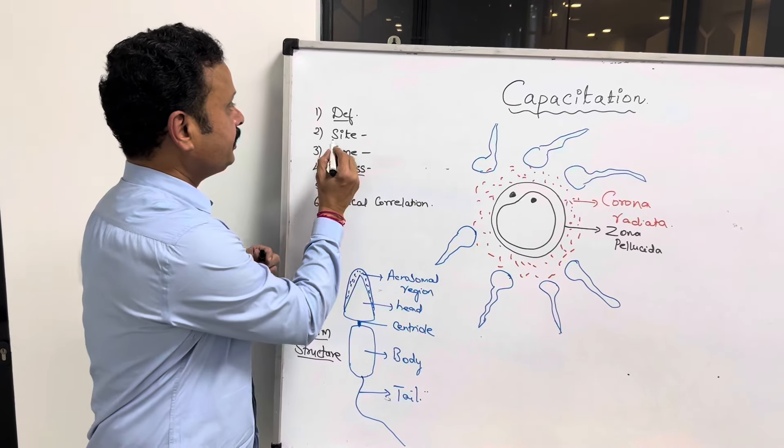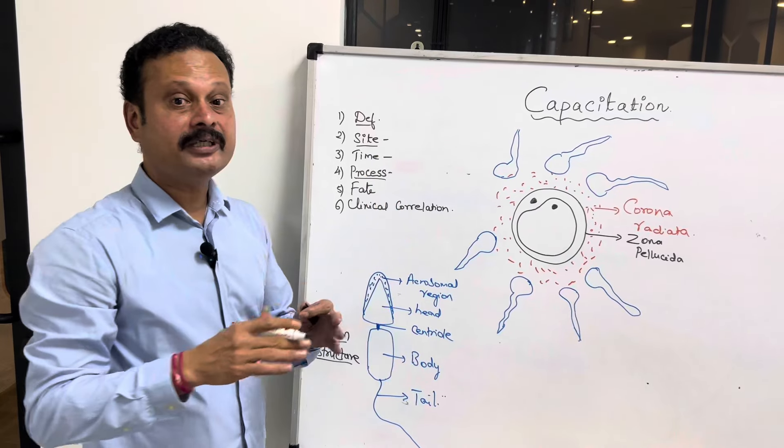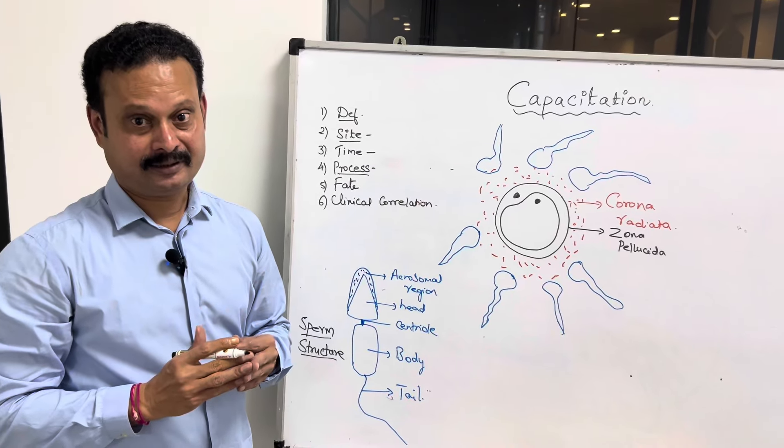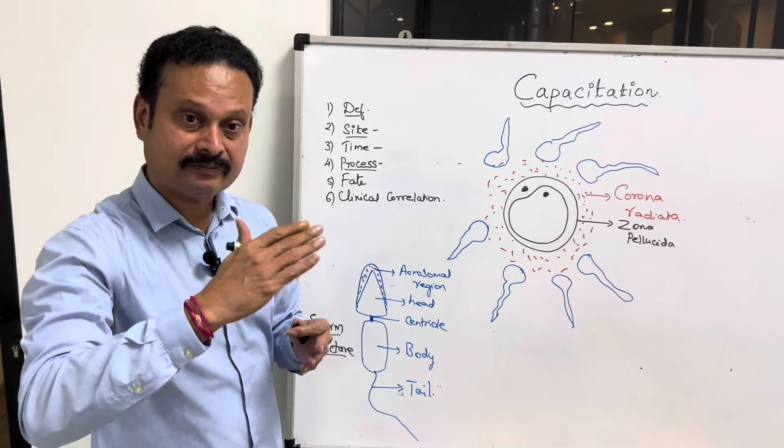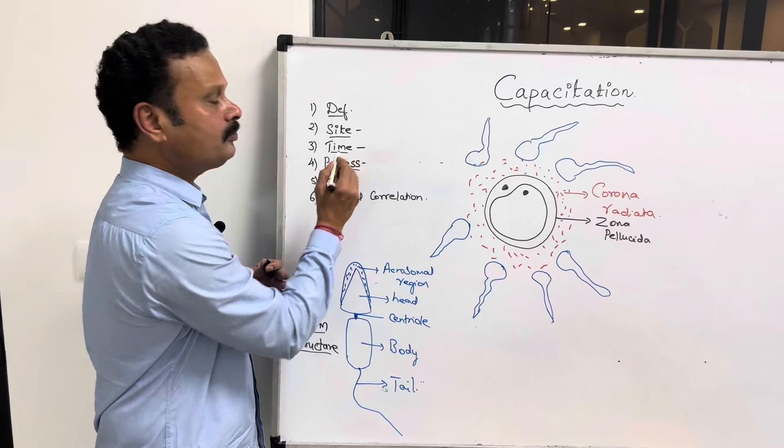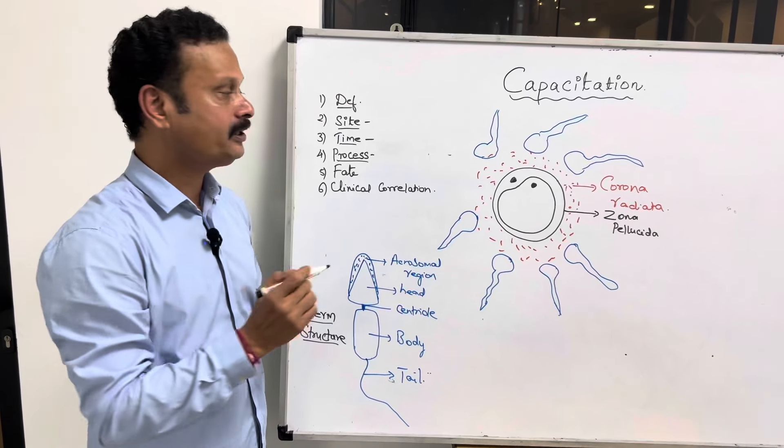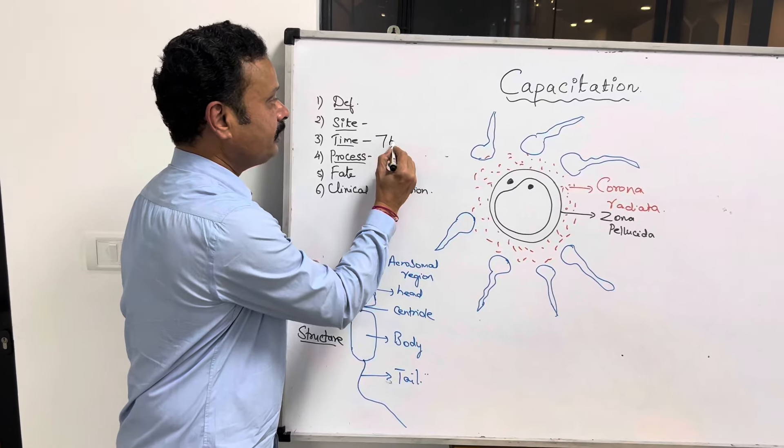Site: where that conditioning or maturation happens. It happens in the female genital tract after ejaculation of the sperms. Time: how much time it takes for the sperm to undergo capacitation? It roughly takes around 7 hours.